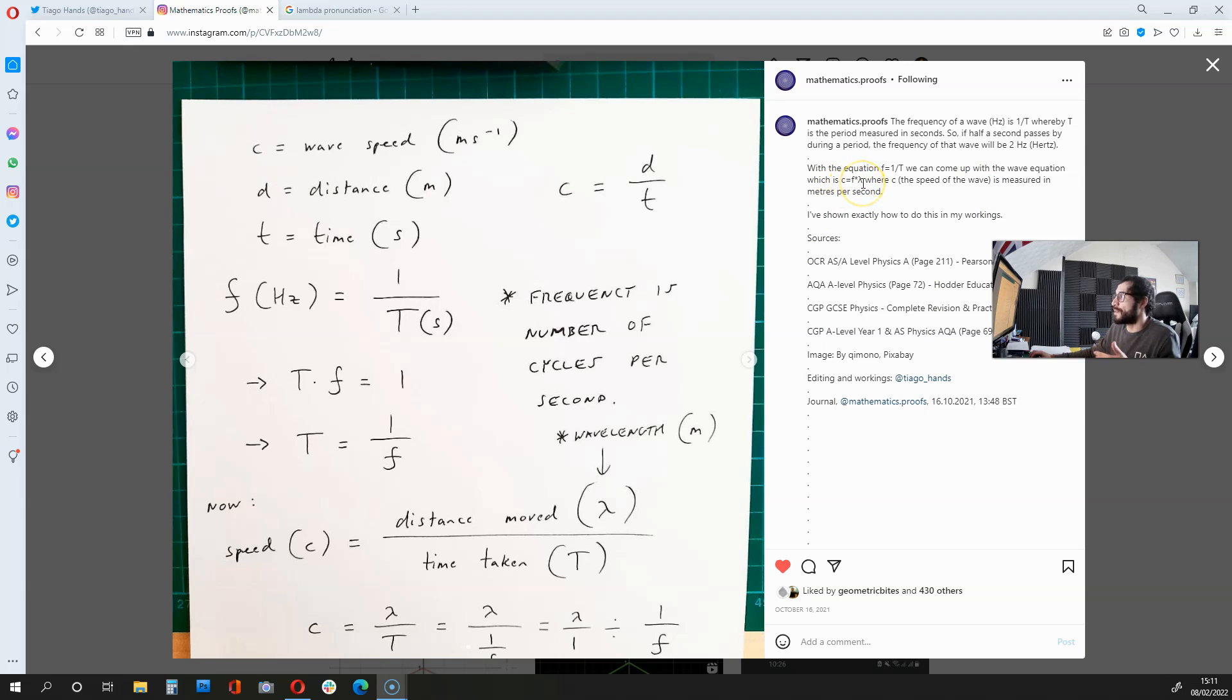Now, to get this c equals f times lambda equation, we first need to know the speed equation, and that is distance over time. What we do with this equation, speed equals distance over time, is replace s with c.